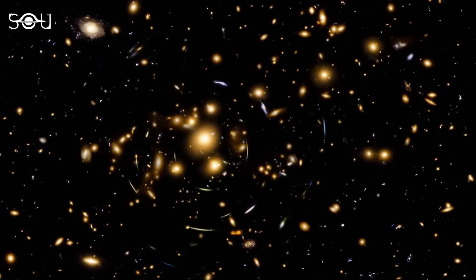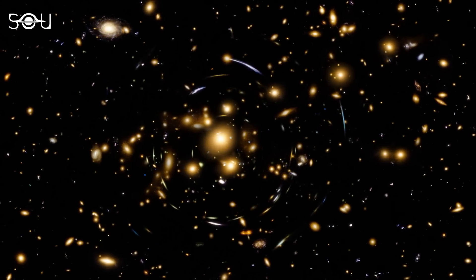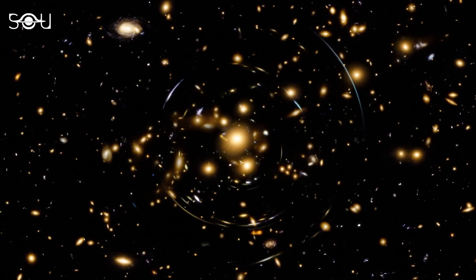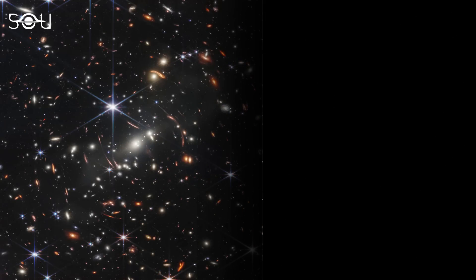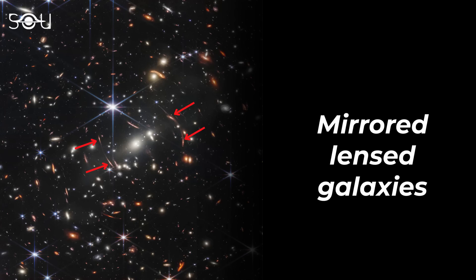Webb's deep-field image portrays gravitational lensing in a way we've never seen before. One can see prominent orange arcs on the left and right sides of the brightest cluster galaxy. These represent the lensed galaxies, with individual galaxies popping out twice in the arc.